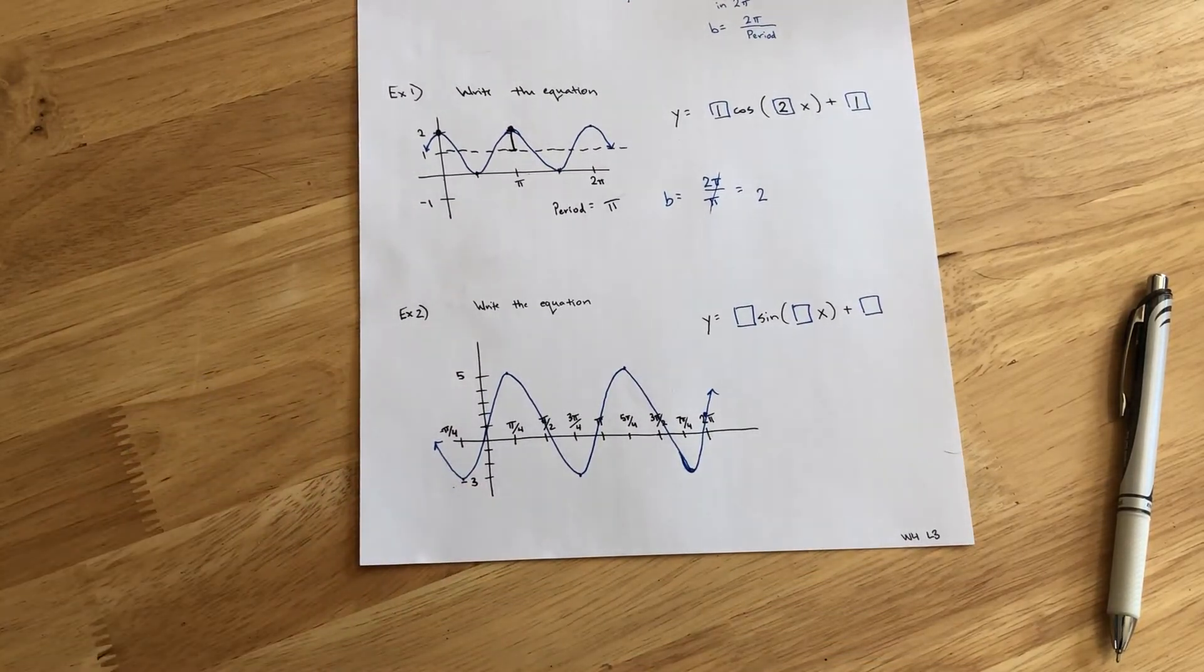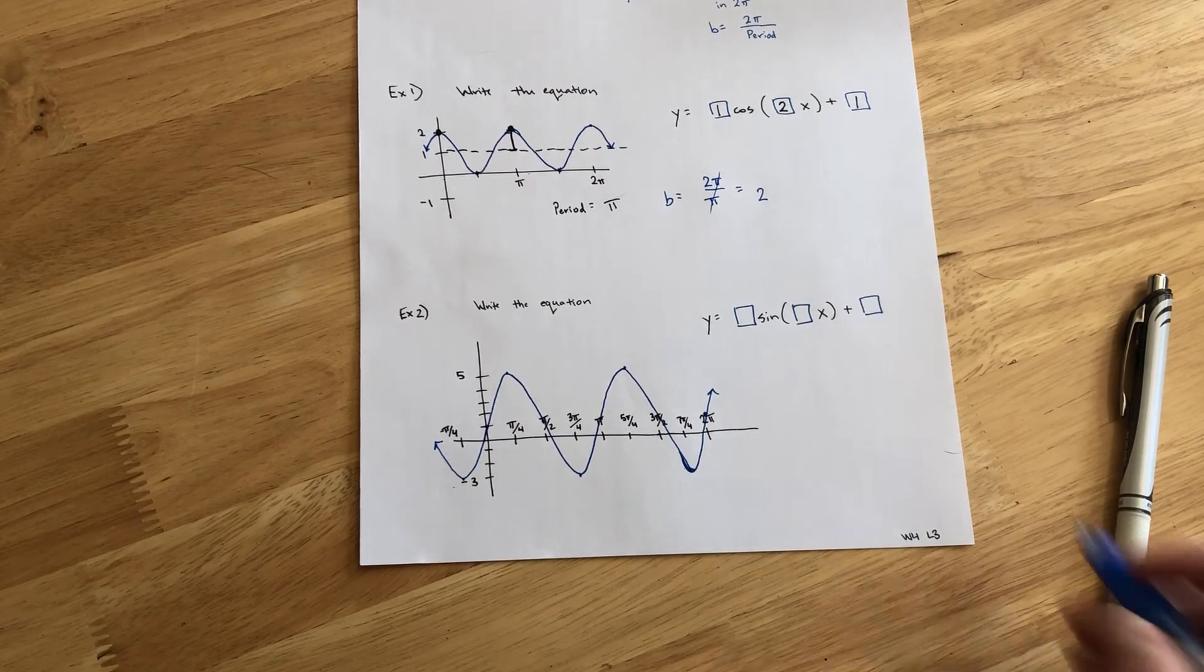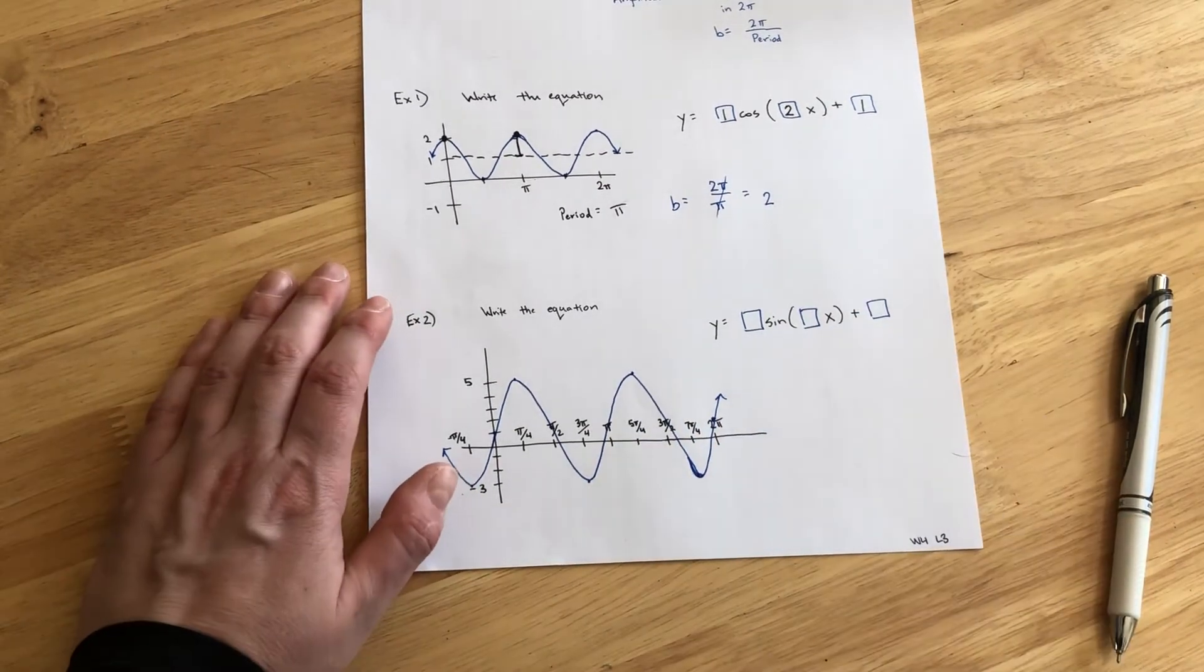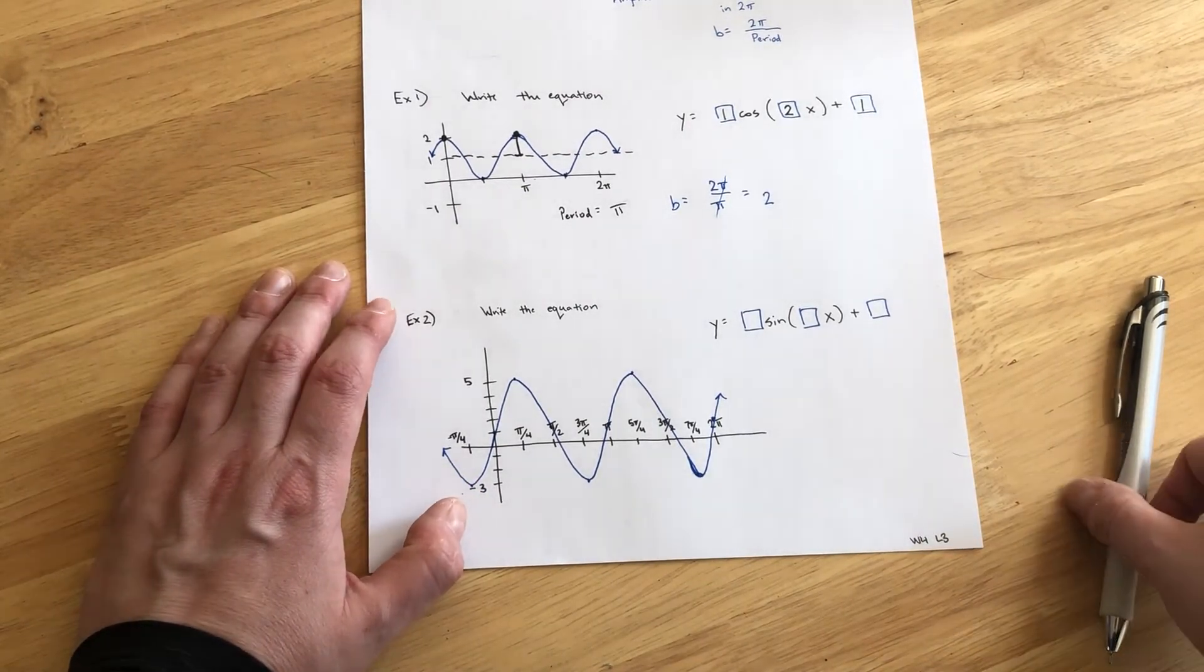If we take a look at example 2, writing the equation for this one, they're telling us to write a sine function that's been identified for us. And Delta Math will do that as well. So, then we definitely want to find our midline first.